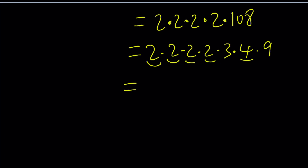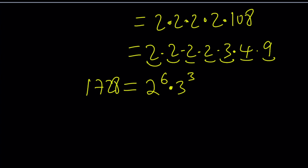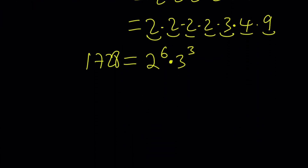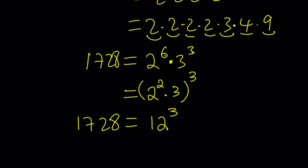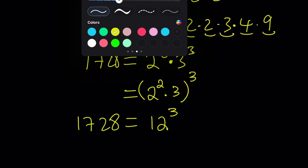Counting the factors of 2: that gives us 2 to the 6th power, times 3 to the 1st times 3 to the 2nd, giving us 3 to the 3rd power. So 1728 in its prime factorization is 2 to the 6th power times 3 to the 3rd power. Now, can I express this as a power of a single number? Notice that 3 goes into 6 twice, giving us a common power. I'm going to write this as 2 squared times 3, all to the 3rd power. And 2 squared times 3 is 12, so 1728 equals 12 cubed. That's how I came up with this number — I just cubed 12.